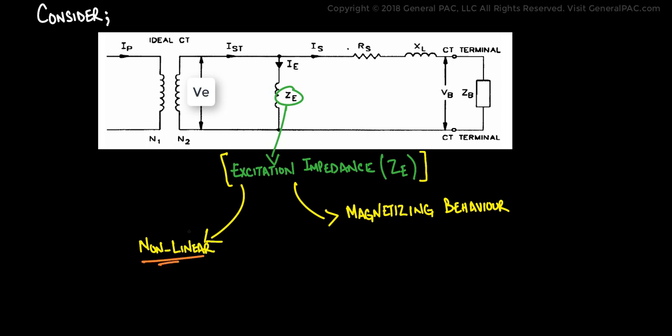Which means that this impedance changes as the CT saturates and it results in a varying secondary excitation voltage VE as well as the varying excitation branch current IE. So, ZE is equal to VE over IE and ZE is a non-linear value. And we will go over this in much more detail later in this tutorial.